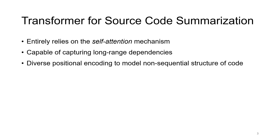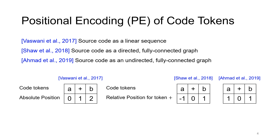Besides, the order of source code tokens plays an important role in embedding the code structure into learned representations. Hence, in this work we study different positional encoding schemes to find an effective way to encode the source code structure. We study the impact of three different forms of positional encoding in learning source code representation. The absolute position encoding scheme treats source code as a linear sequence of code tokens, while the relative position encoding considers source code as a fully connected graph, either directed or undirected.